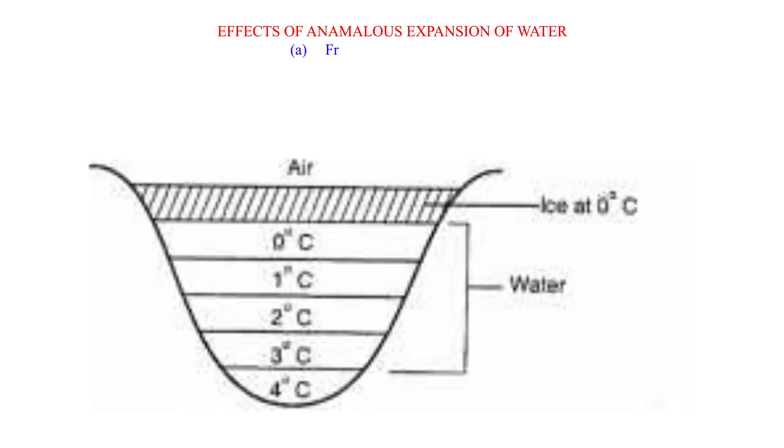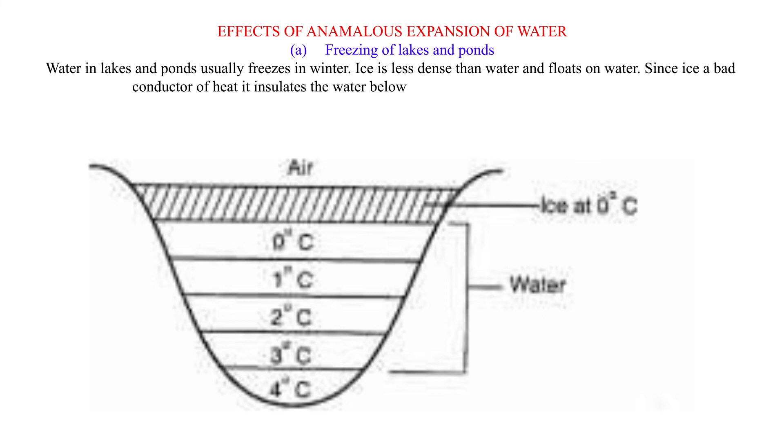Effects of anomalous expansion of water. First, freezing of lakes and ponds. Water in lakes and ponds usually freezes in winter. Ice is less dense than water and floats on water. Since ice is a bad conductor of heat, it insulates the water below against heat losses to the cold air above.